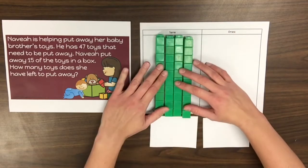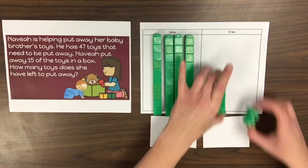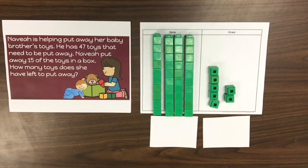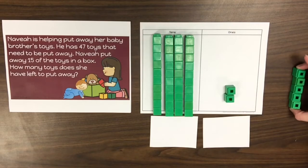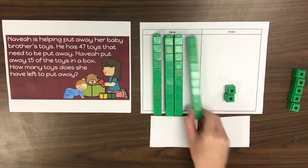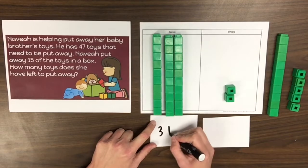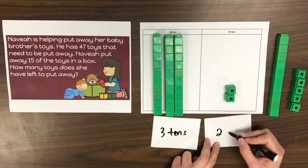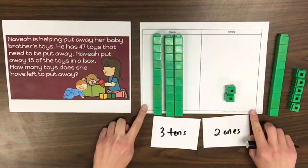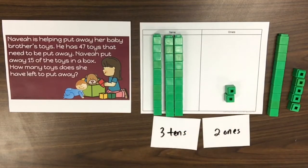There were 47 toys, so we'll represent that with four tens and seven ones. We'll need to separate linking cubes to represent the toys that Nevaeh has already put away, which is 15. We'll begin by separating our ones from the starting amount — five ones should be separated. Now we'll need to separate the ten from the starting amount — one ten is separated. Using the linking cubes, we can see that 15 was separated, and there are three tens and two ones left. Nevaeh has 32 toys left to put away.